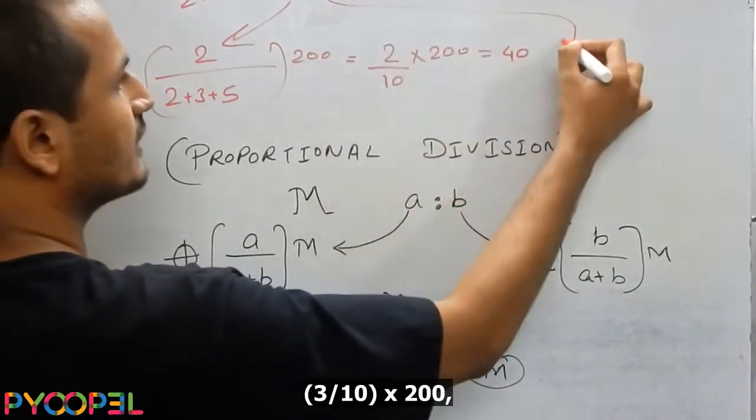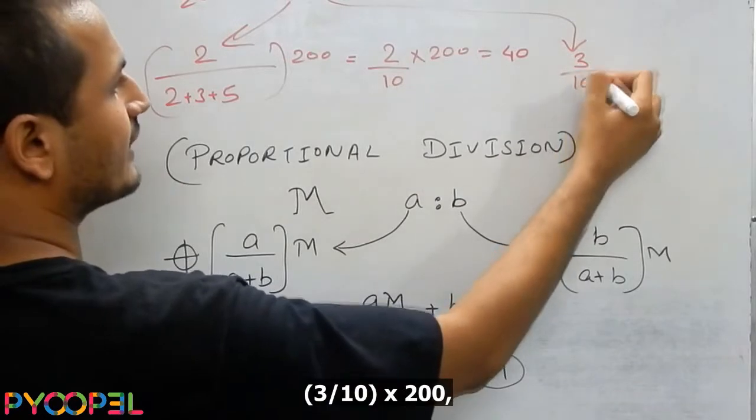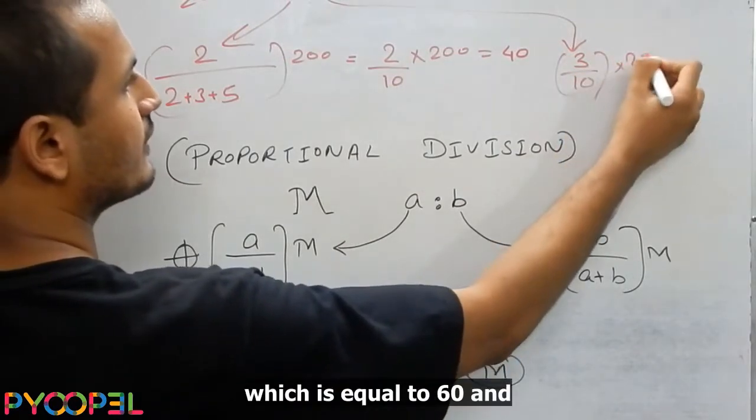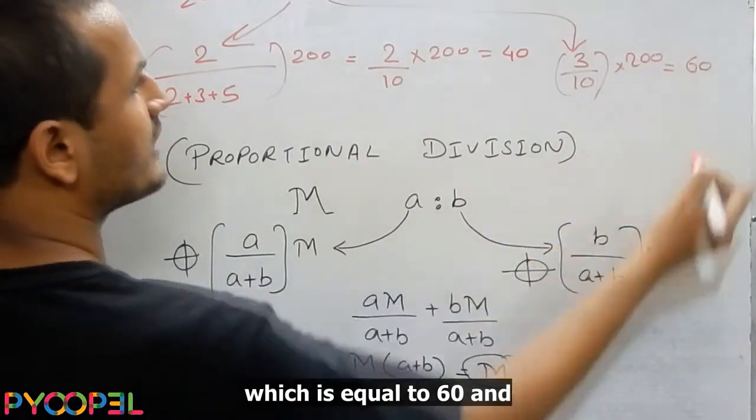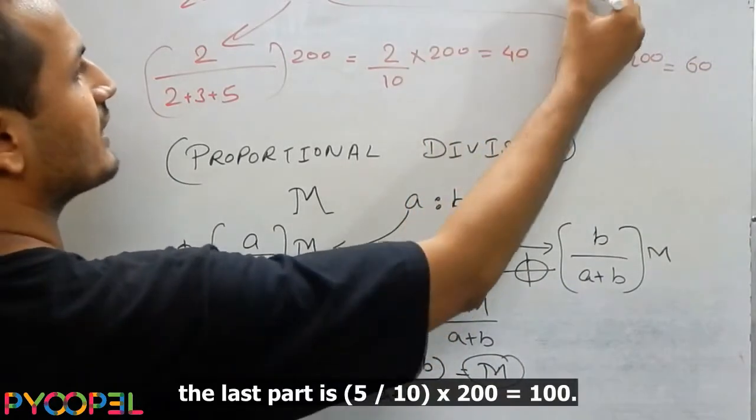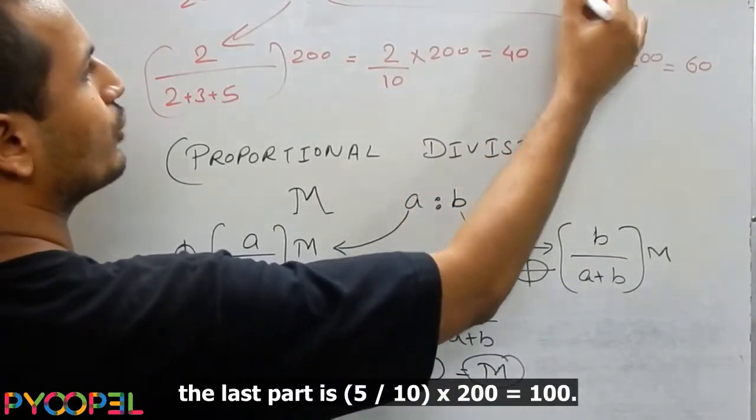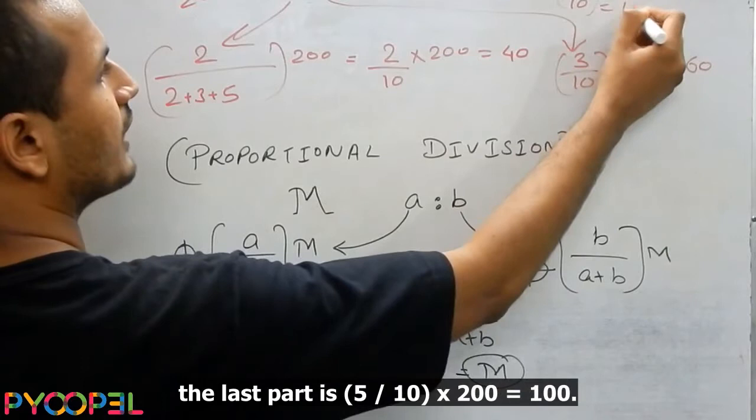The second part is 3 by 10 into 200, which is equal to 16. And the last part is 5 by 10 into 200, which is equal to 100.